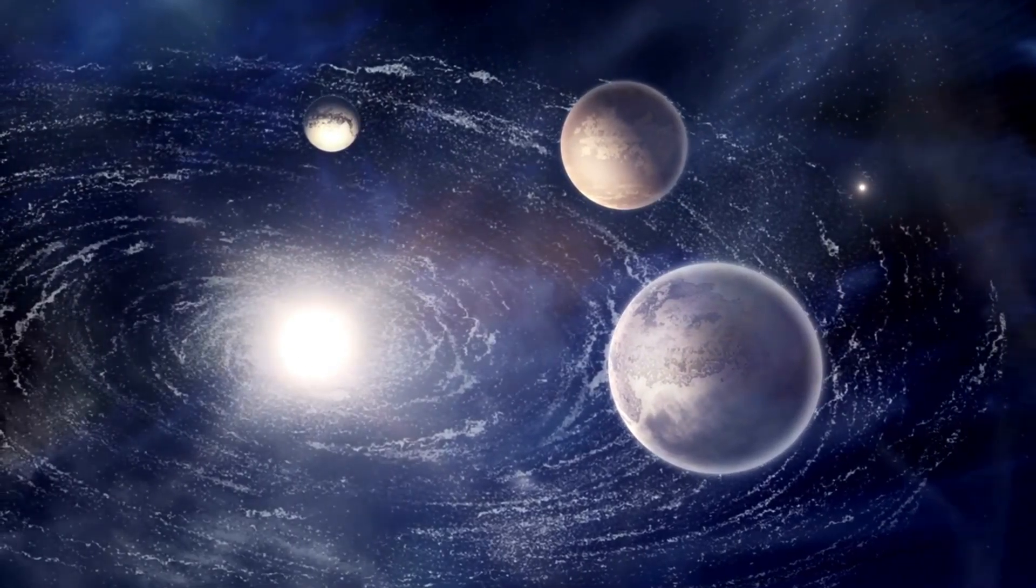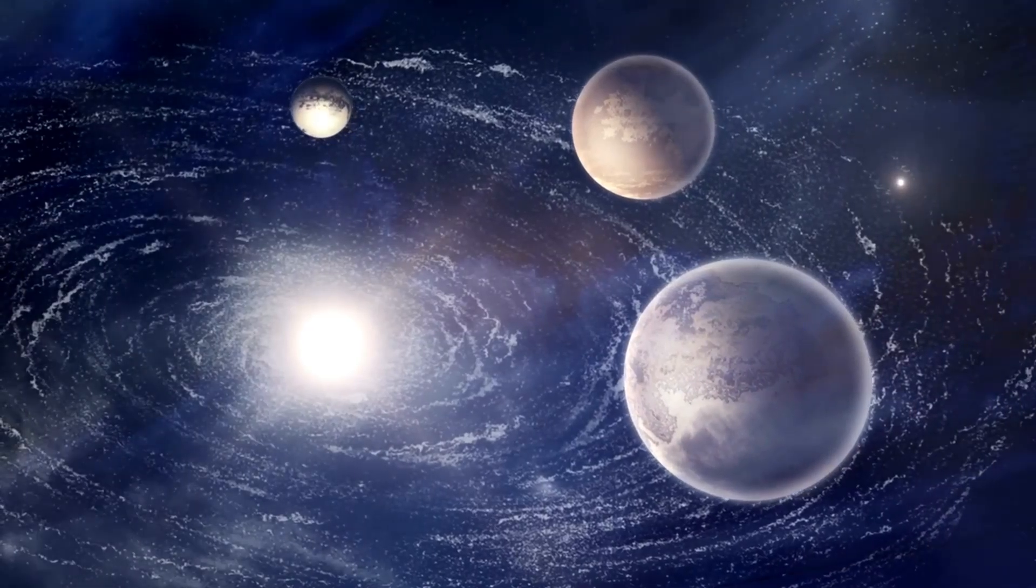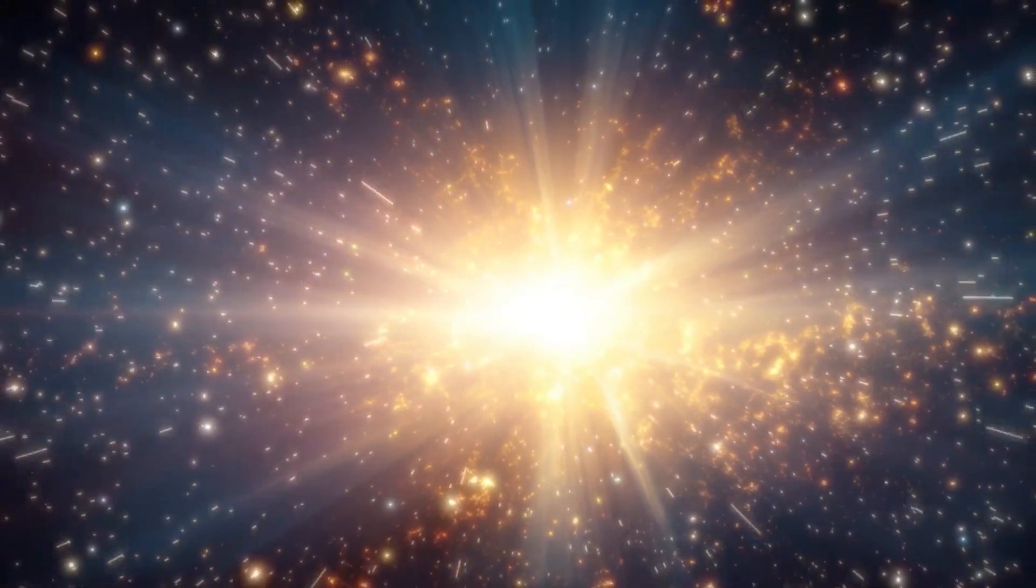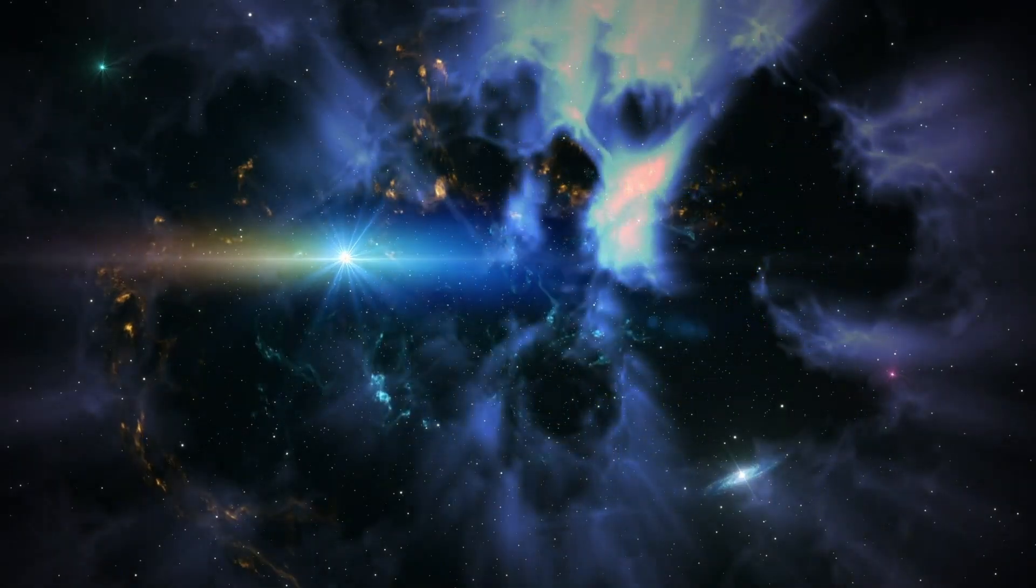Planetary groups, the structure blocks of our enormous area, are never again as they used to be. A stunning 771 trillion nearby planet groups have strangely vanished, leaving the logical community bewildered. What follows is downright incredible.